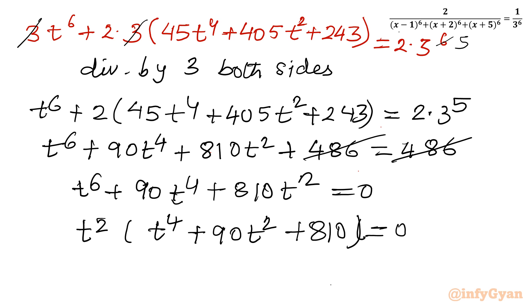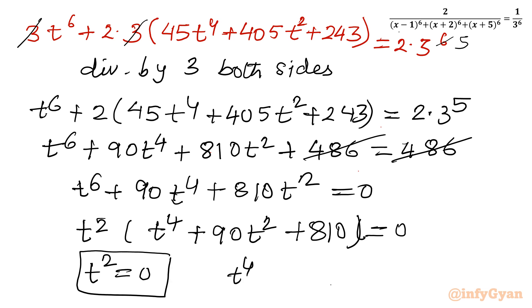So either t² equals 0, or the quartic equation t⁴ plus 90t² plus 810 equals 0. Let us solve both equations.